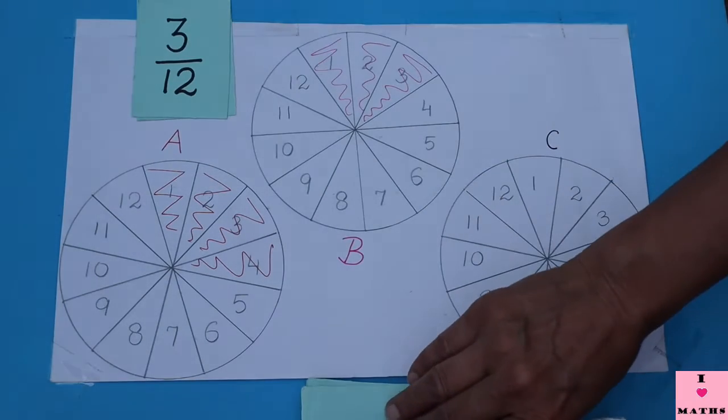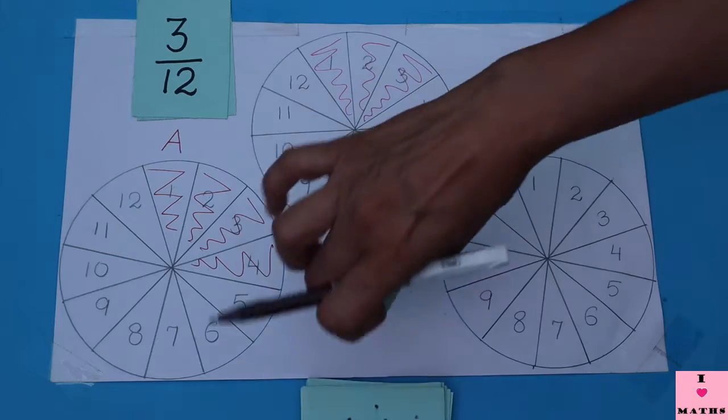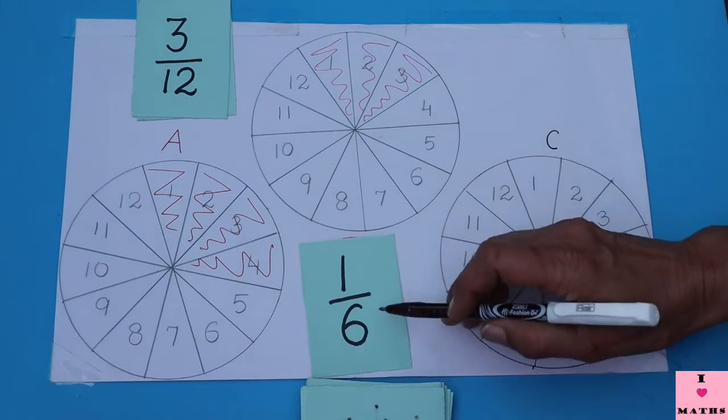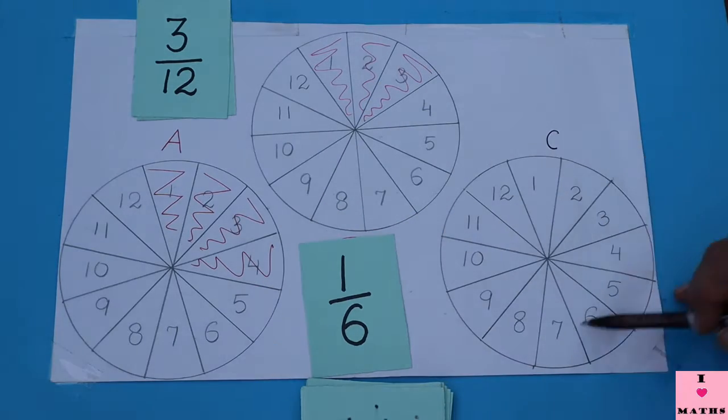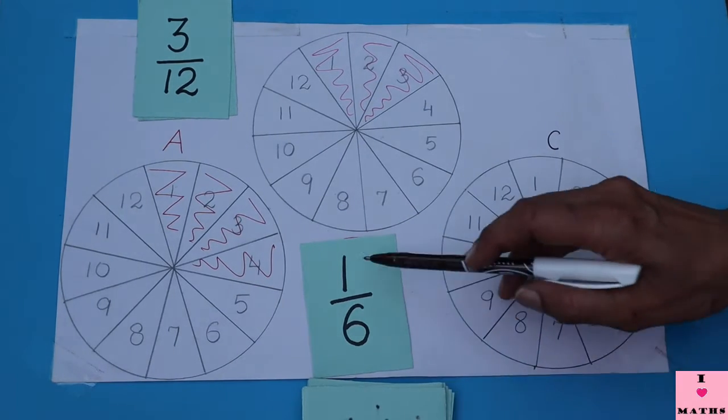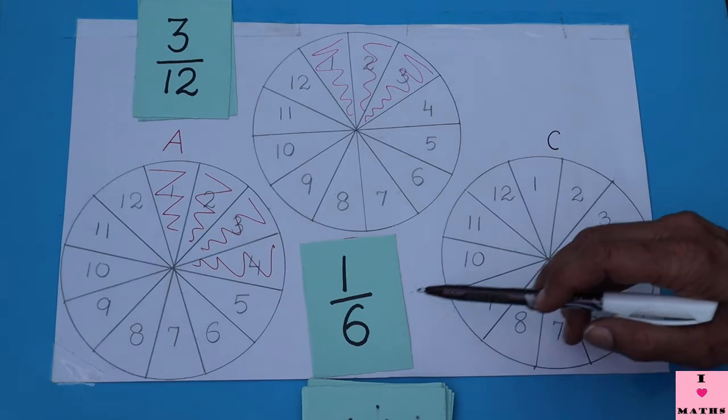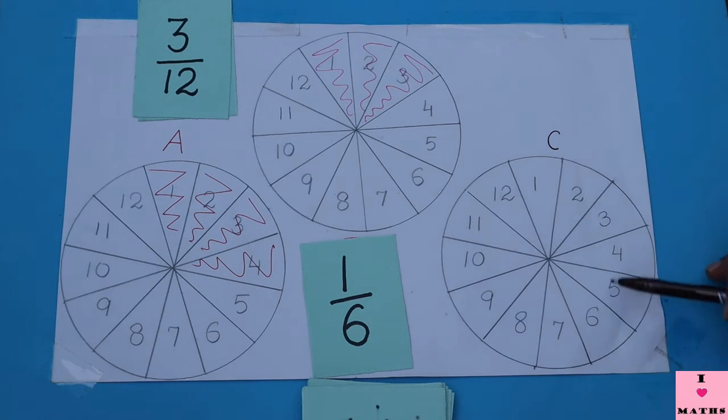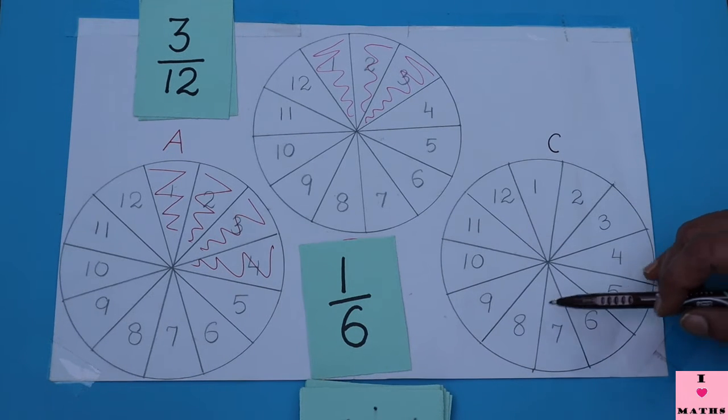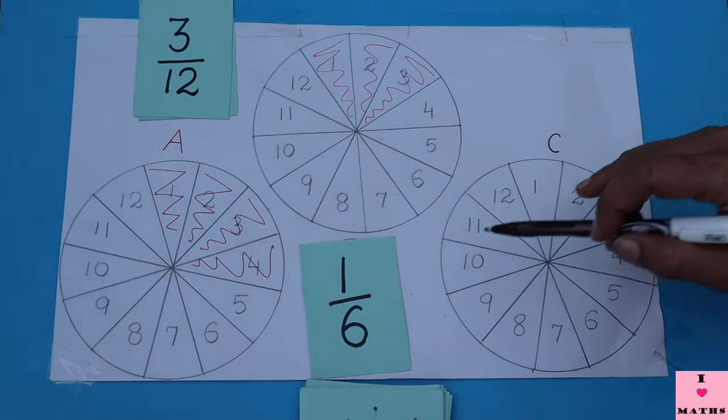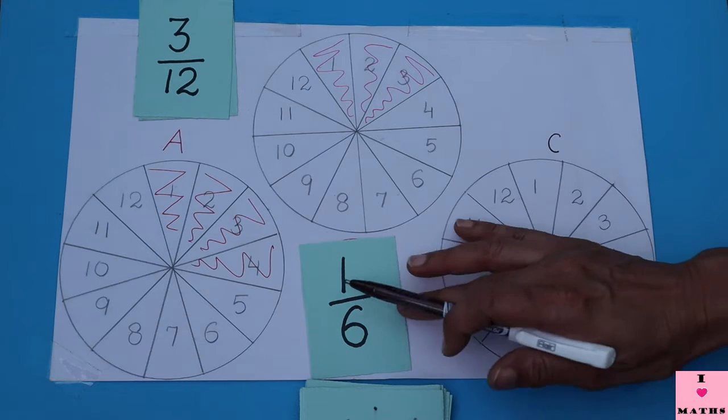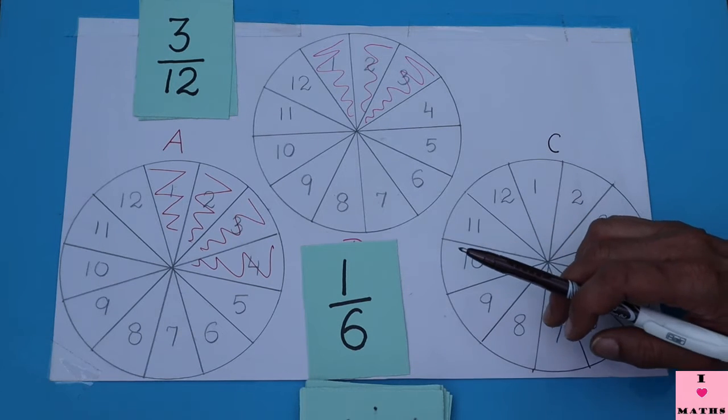Okay, now C will pick up a slip. 1 out of 6. Now there are 12 equal parts and 1 out of 6 have to be colored. It means this has to be divided in 6 equal parts. 6 twos is 12, so 1 part will be equal to 2 divisions. So C has to color 2 divisions.